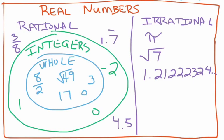So one more time for definitions: whole numbers are the counting numbers starting from 0, 1, 2, 3 and up. Integers are all of those whole numbers including 0 and their opposites, so integers include negative numbers as well. Rational numbers are anything that can be written as a fraction.